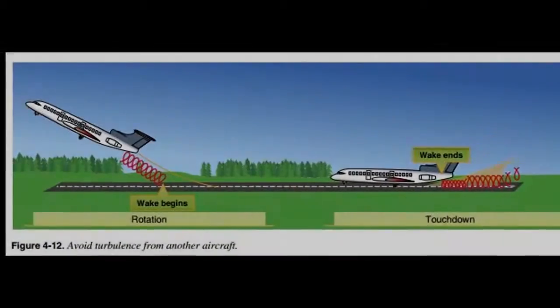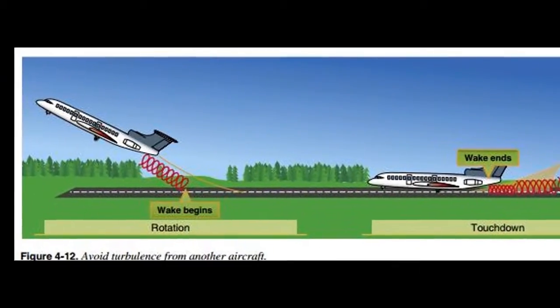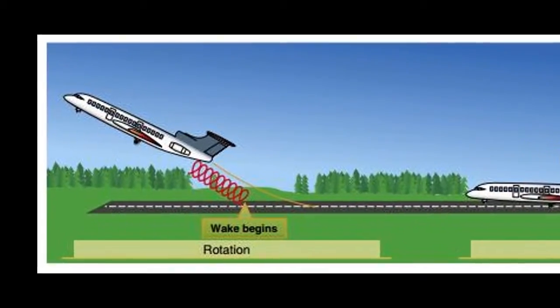Let's say we're at this airport and we're taking off behind a big jet. As they're rolling down the runway, they're not creating lift until that nose comes off the ground. Anything before that point, we're okay as far as taking off, but you have to be careful because large jets can have a pretty steep climb angle — you can't beat that climb angle.